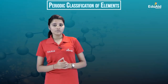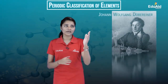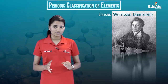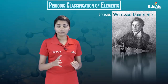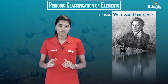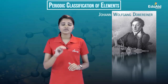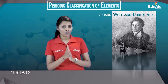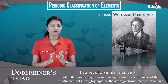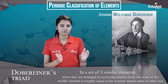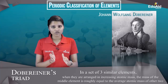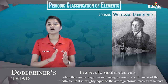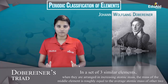The first attempt to arrange the elements was made by Döbereiner. His approach was based on triads — a set of three elements with similar properties. Döbereiner found that when three elements are arranged in order of increasing atomic mass, the atomic mass of the central atom was roughly equal to the average of the atomic masses of the other two elements.